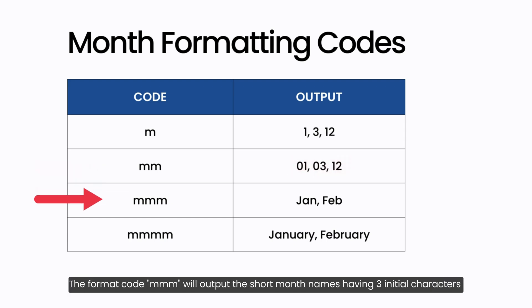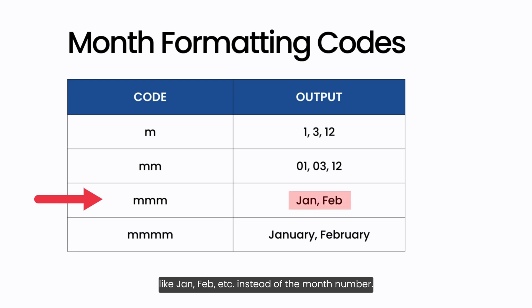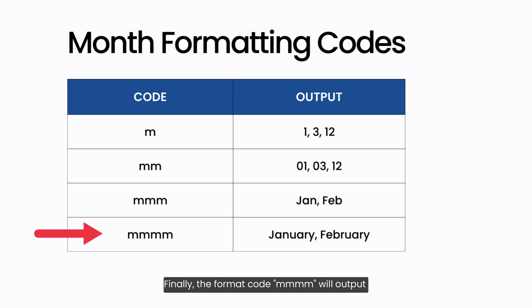The format code mmm will output the short month names with three initial characters like Jan, Feb, etc., instead of the month number. Finally, the format code mmmm will output the full month name like January, February, etc.